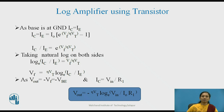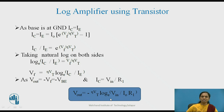Taking the log on both sides, log of Ic over I0 equals Vf by eta·Vt. Here Vout equals minus Vf, which is the negative of the voltage between the emitter and base terminals, and Ic equals Vin by R1. So we again get the output voltage equation directly proportional to the log of the input voltage signal.